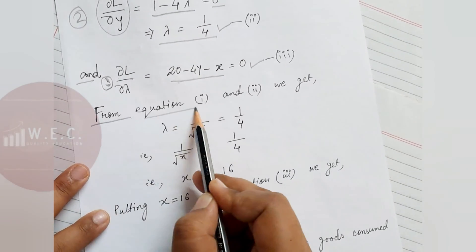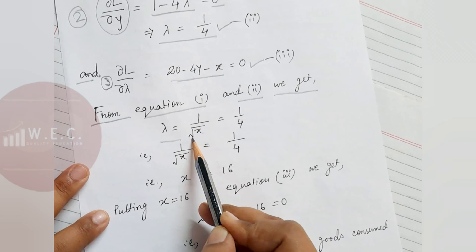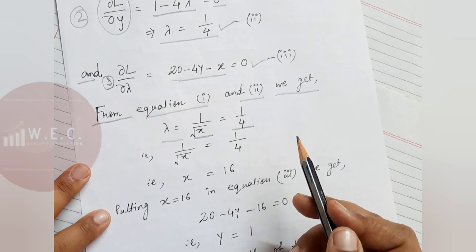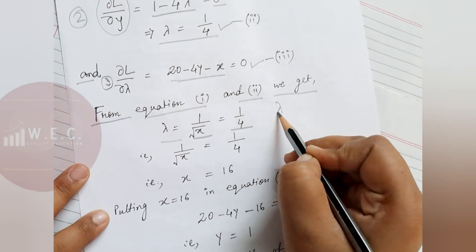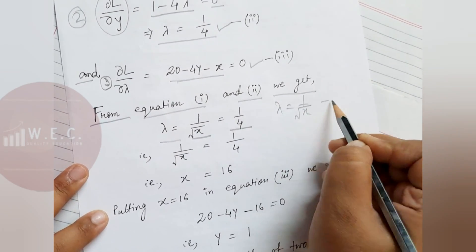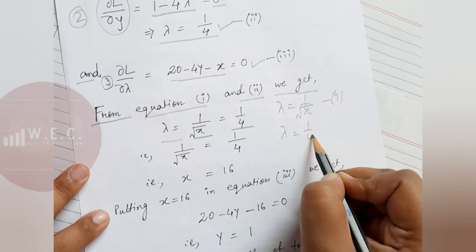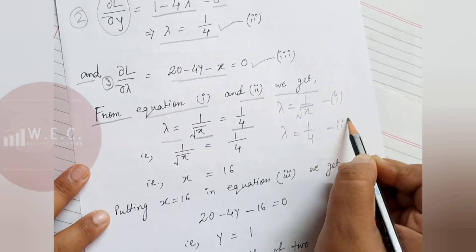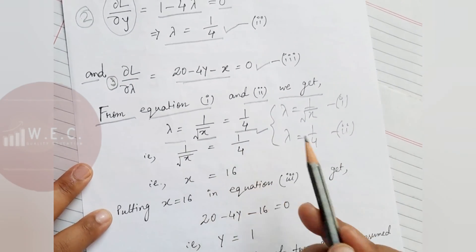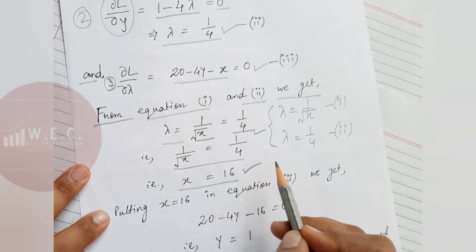From Equations 1 and 2, we equate the two expressions for λ: 1/√x = 1/4. Solving this gives x = 16.